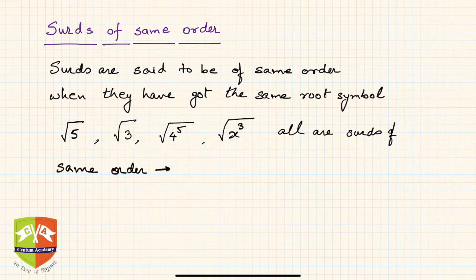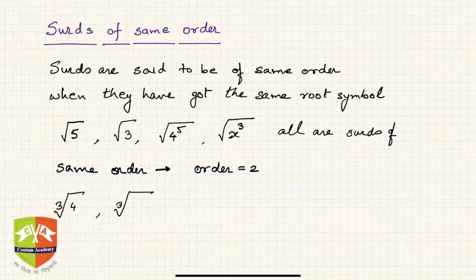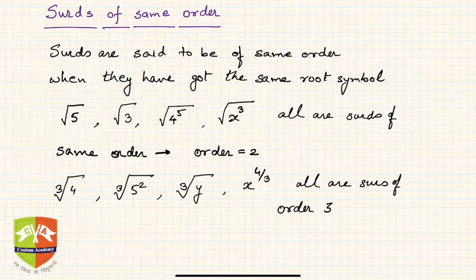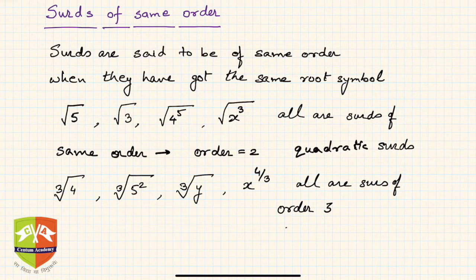In this case, the order is 2 because we are finding the square root, so order is equal to 2. Similarly, cube root of 4, cube root of 5 squared, cube root of y, and x to the power 4/3 — all are radicals of order 3. When the order is 2, these are called quadratic radicals. When the order is 3, these are called cubic radicals.